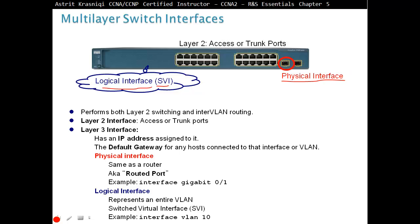By default, all physical interfaces on a multi-layer switch are Layer 2. To give an IP address to a physical interface, you must convert it from Layer 2 to Layer 3. Once converted, it is called a Routed Port. Go to that physical interface, apply the IP address, and anything connected to that interface can use it as a gateway. For SVIs, you create them per VLAN — for example, for VLAN 10 the command is 'interface VLAN 10', then assign an IP address.